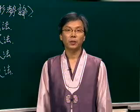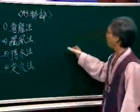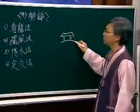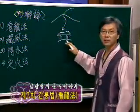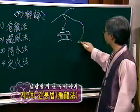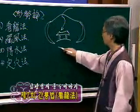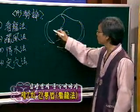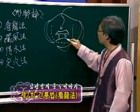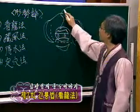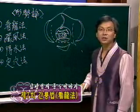형세론에는 간용법, 장풍법, 득수법, 정혈법이 있습니다. 간용법이란 우리 집 턱까지 뒷산에서 들어오는 단 한 줄기만의 산기운을 의미하고, 주변의 다른 산들을 이야기하는 것을 장풍법이라 하고, 그 사이로 흐르는 계곡의 물을 관찰하는 법을 득수법, 그 안에 산기운이 멈춰서 혈자리에 멈춰지는 자리를 관찰하는 법을 정혈법이라고 합니다.